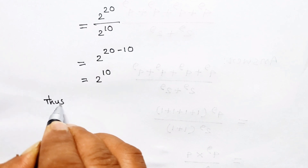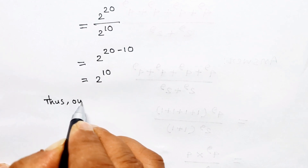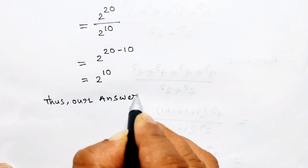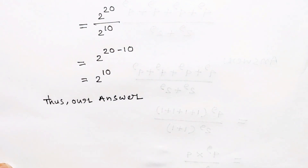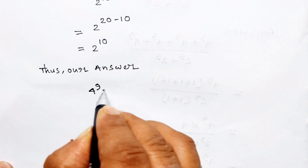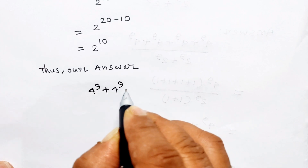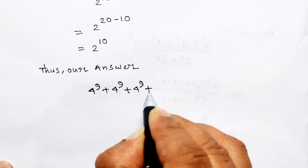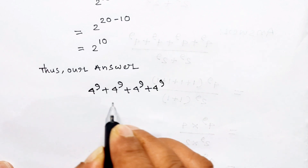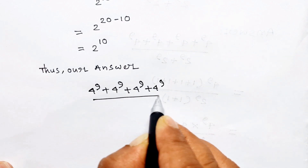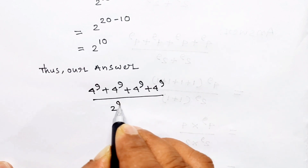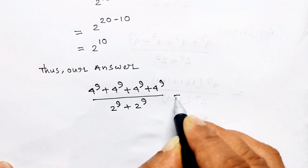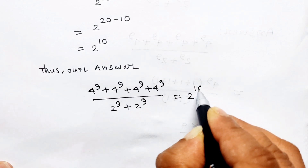Thus our answer: 4 to the power 9 plus 4 to the power 9 plus 4 to the power 9 plus 4 to the power 9, divided by 2 to the power 9 plus 2 to the power 9, equals 2 to the power 10.